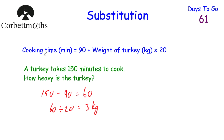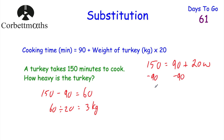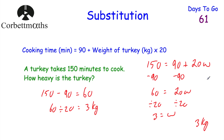Alternatively, we can form an equation. The cooking time is 150 minutes, so: 150 equals 90 plus 20W. To solve, subtract 90 from both sides: 60 equals 20W. Then divide both sides by 20: W equals 3. So the turkey weighs 3 kilograms. In this question you could work backwards or form an equation and solve it.